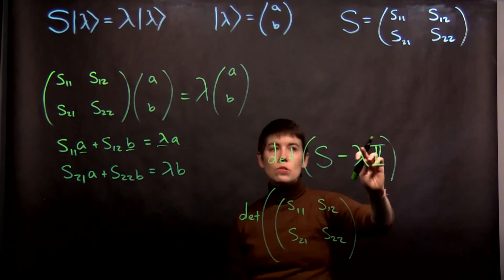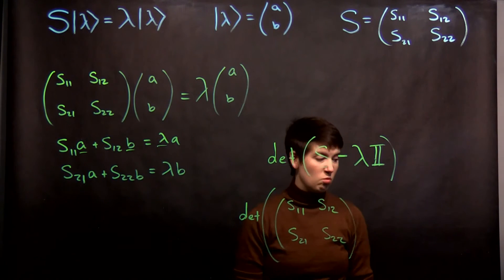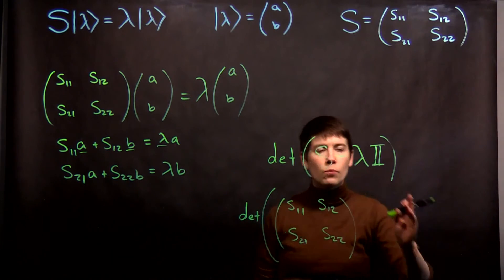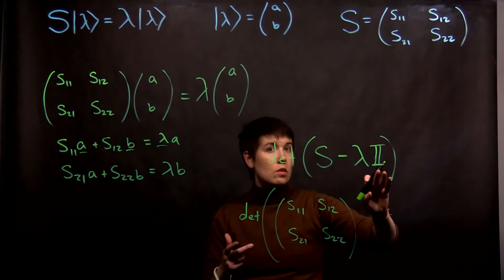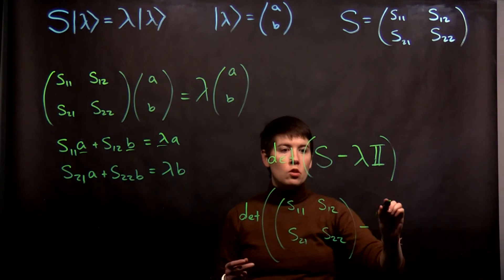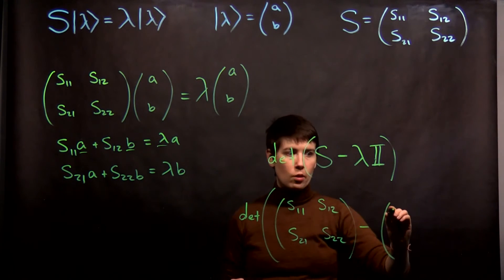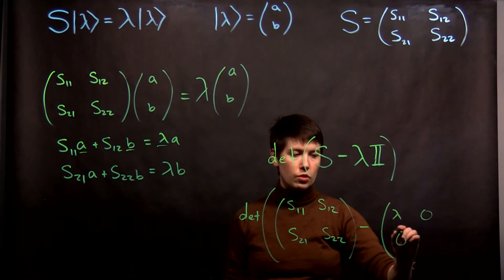But now what is this object? This is a scalar, lambda is just some scalar we're looking for. And this is ones on the diagonal and zeros everywhere else. So in this case it's a two by two, so that would be lambda, zero, zero, lambda.